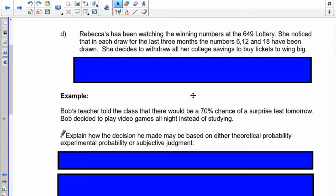Rebecca's been watching the winning numbers at the 649 lottery. She has noticed that in each draw for the last three months, the numbers 6, 12, and 18 have been drawn. She decides to withdraw all of her college savings and buy tickets to win the big jackpot. So, is this experimental, theoretical, or subjective? So, in order to be theoretical, there'd have to be some sort of a calculation involved with percentages and probability, and there's none here. So, theoretical is out. In terms of experimental, did she retrieve any data and do any checking with it? Yes, she did. In this case, she took a look at the numbers 6, 12, and 18, and realized that those ones are going up more often in the last three months. In fact, they came up every time in the last three months. So, she's going to take and withdraw all of her savings and bet them on these three numbers coming up. Now, that is experimental. Now, the third type would be subjective. Did she just ignore everything and go with her feelings? That is no, she did not. So, this one here is straight experimental.